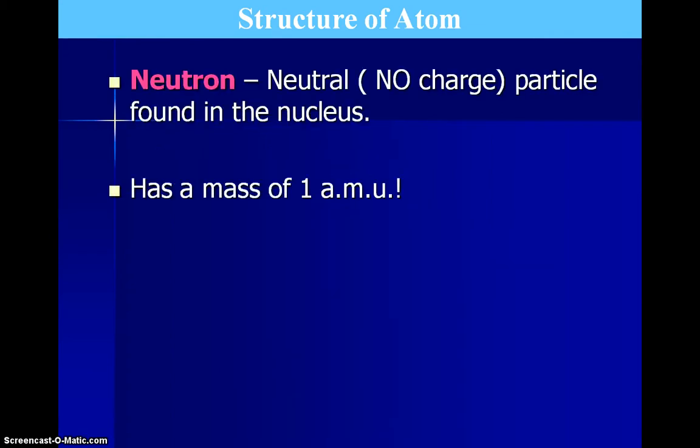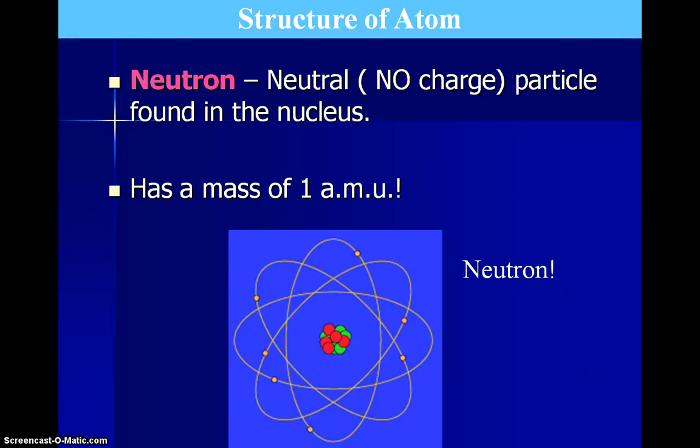Also in the nucleus, we have neutrons. However, the neutrons do not have a charge, which is why the nucleus is overall positively charged. They also have the same mass as a proton, which we say is one atomic mass unit. So each neutron and proton we give sort of a value of one.